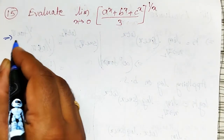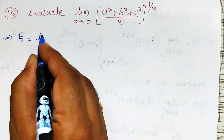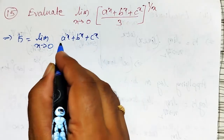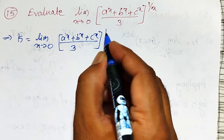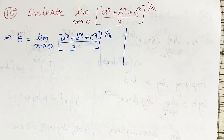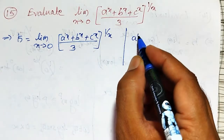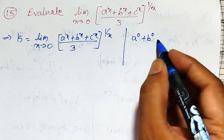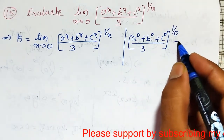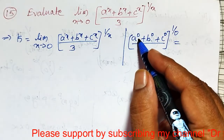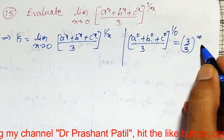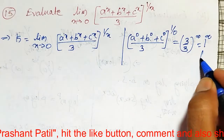To evaluate this, let me call k equal to the limit as x tends to 0 of (a^x + b^x + c^x) / 3, whole raised to 1/x. We need to check what indeterminate form this is. As x tends to 0, a^0 + b^0 + c^0 = 1 + 1 + 1 = 3, divided by 3, whole raised to 1/0. That gives us (3/3)^∞, which is 1^∞ form.